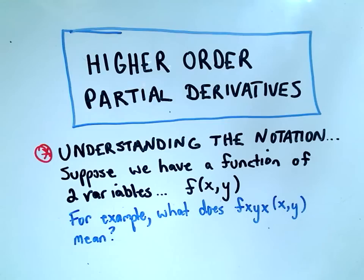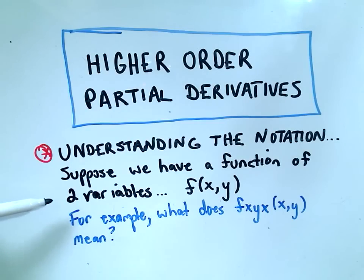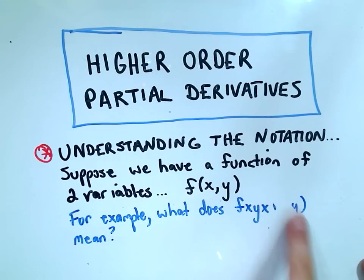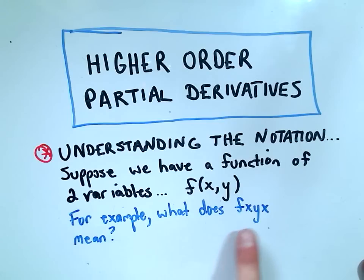In this video, I just want to do an example of finding higher-order partial derivatives. The first thing I want to talk about is just understanding the notation. Suppose we have a function of two variables, x and y. We want to understand what the notation f_xy(x, y) — or sometimes just written as f_xy — means.